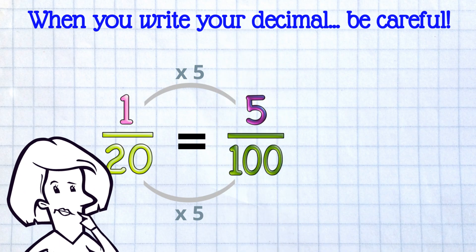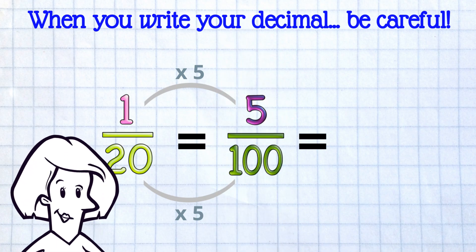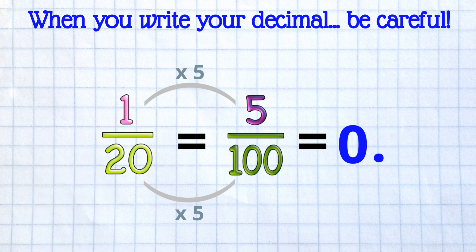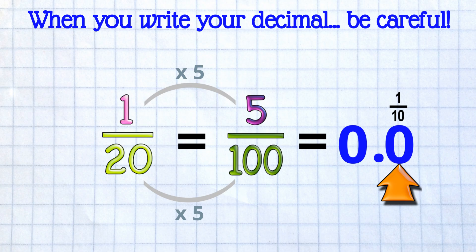be careful! There are no whole numbers, so 0, then decimal point. Now take care! The first decimal place is tenths. We don't have any tenths, so we put a 0 to show that. Then we've got the hundredths place, and that's where we put our 5. We see that 1 twentieth equals 0.05.